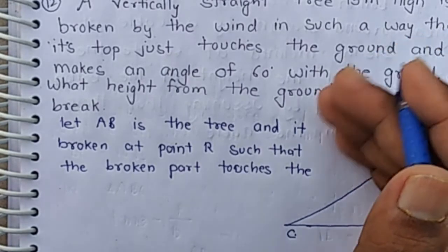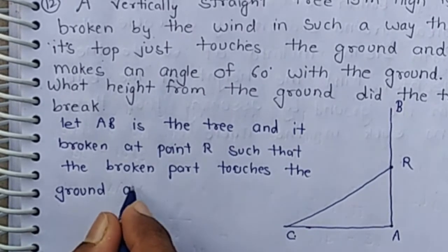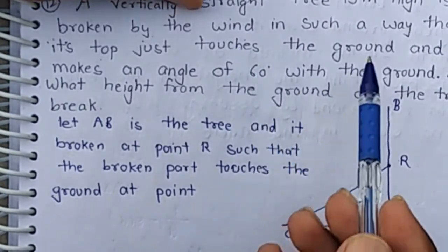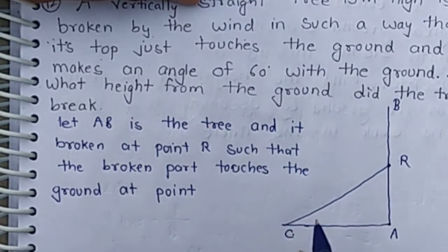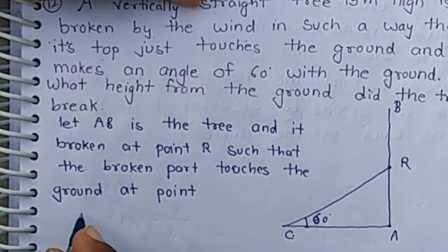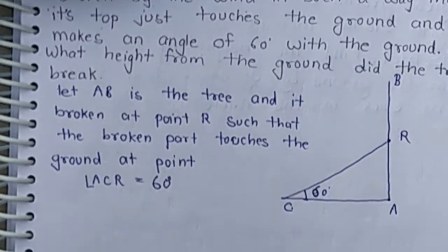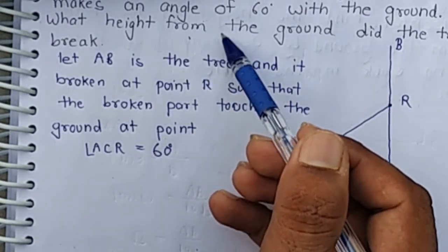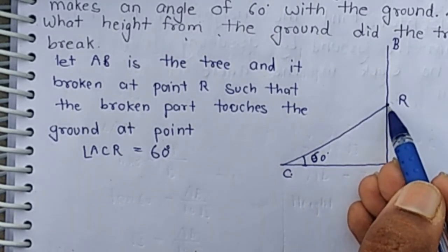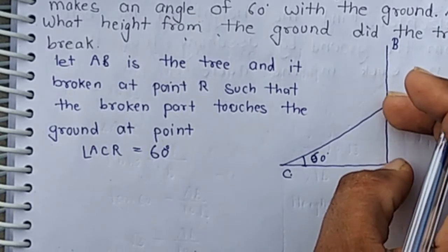Broken part BR touches the ground at point C and the broken part makes an angle 60 with the ground, means angle RCA is 60 degree. And we have to find at what height from the ground did the tree break, means we have to find AR is the height where the tree has broken by the wind.